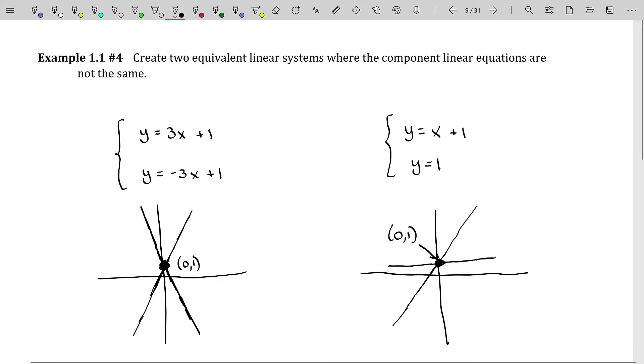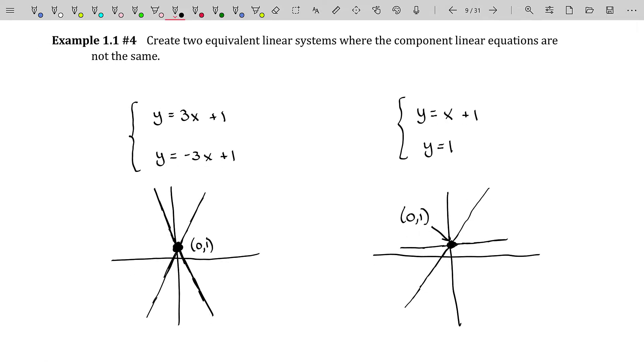So it's very important that you understand that definition because we're going to be using that definition quite a bit. If I say I have two systems that are equivalent, that does not mean that their equations are equal. It just means that their solution sets are equal. Wherever their equations or their graphs cross, they cross the same points in both systems.